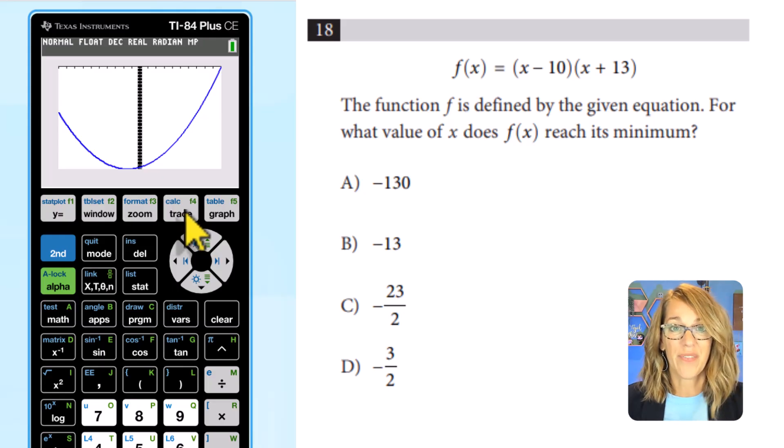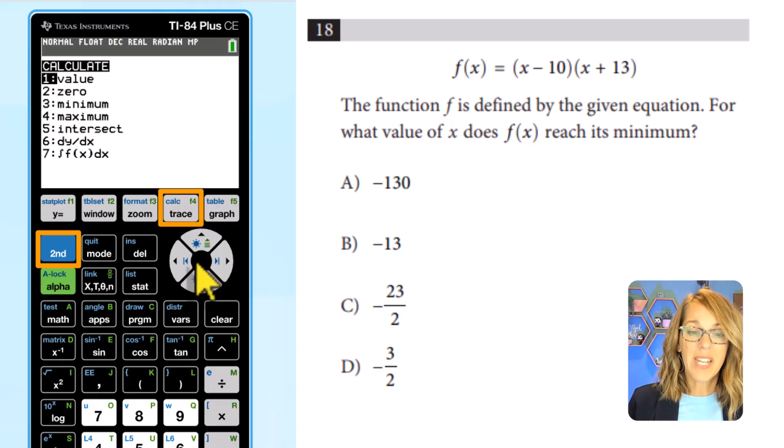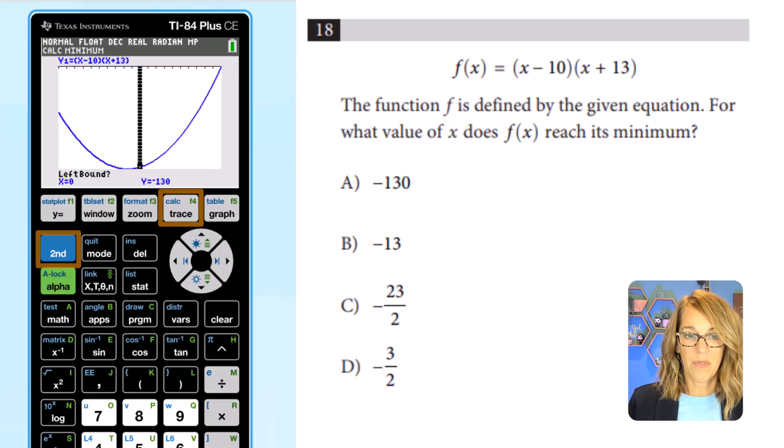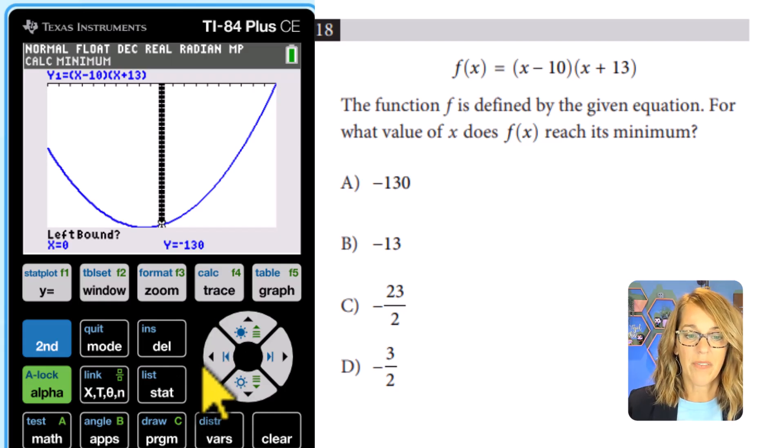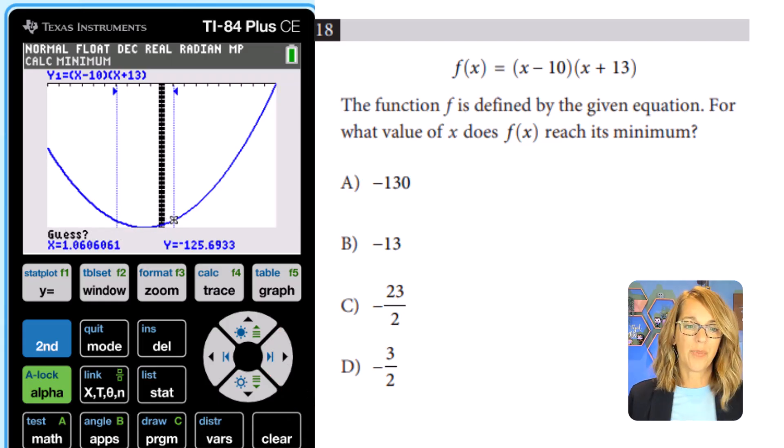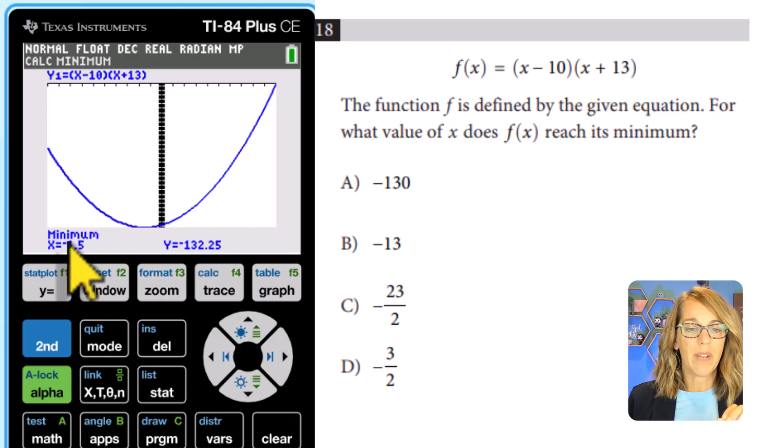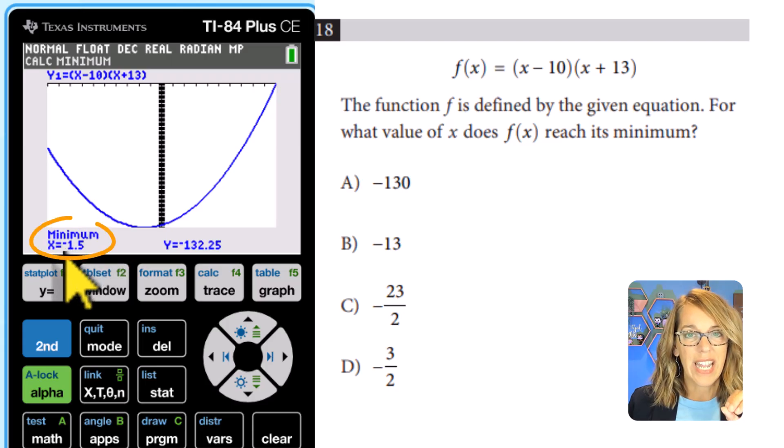So now I'm ready to ask the calculator to find that minimum. We're going to use calc, which is second here of trace. So I'm going to go second followed by trace. We are looking for a minimum value. So I want a minimum value. Enter. And it needs to know a value on the left and a value on the right. So where do you want to put it on the left? I'm just going to use my left arrow here just to move to the left of that minimum. And then enter. And it says what's the right bound. Let's just use the right arrow to get to the right of that minimum. And then enter. And it says, what's your guess? You can move your cursor to your guess. I always just leave it. Let's do enter. And there is my minimum. Now it asked for the x value where it reaches the minimum, not the y value. So the x value is that negative 1.5. And negative 1.5 is equivalent to negative 3 halves.